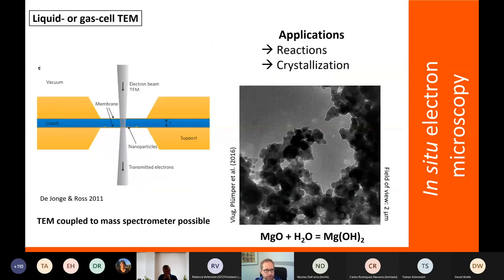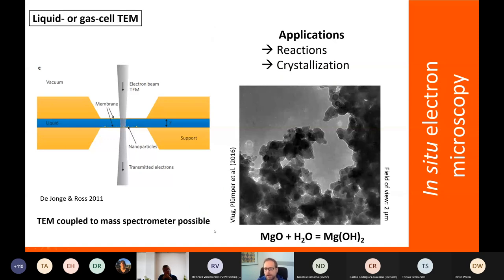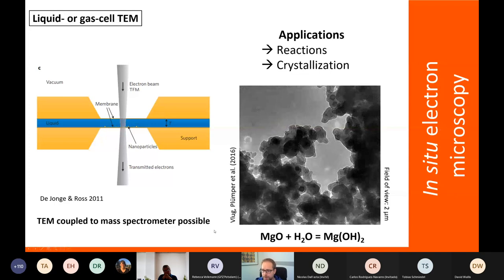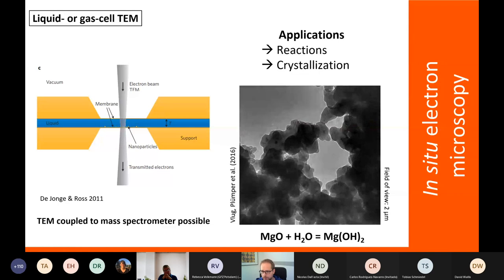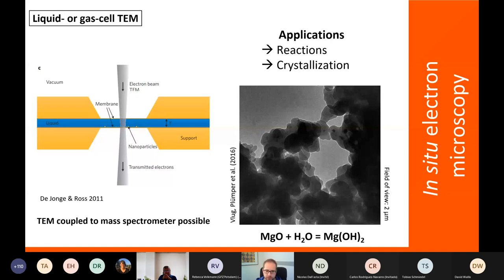Leon Benning will talk a little bit more about liquid cell or gas cell TEM. You can also observe reactions happening live inside the TEM. Carlos mentioned this already. This is just a small movie of the hydration of magnesium oxide to brucite, which is a huge swelling reaction, and the field of view here is two micrometers. You can really look at chemical reactions, crystallization inside the TEM, so you have a direct observation technique. You can also couple TEM to mass spectrometry, specifically in gas cell TEM, where you can look at the results or the products that have been produced during such a reaction.